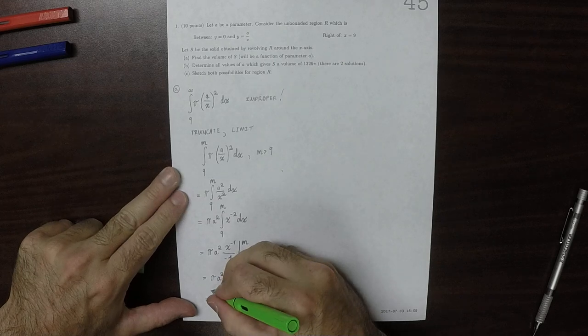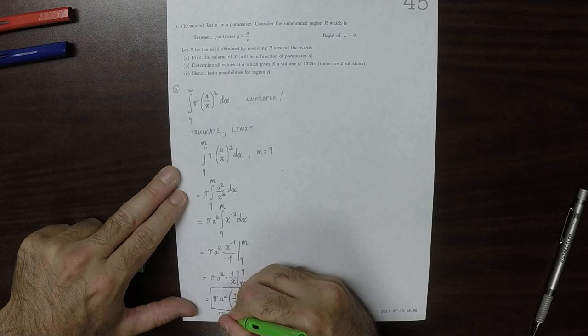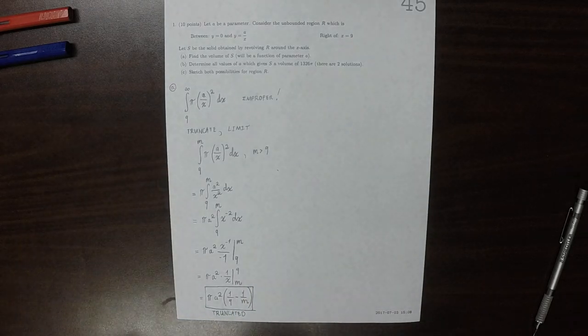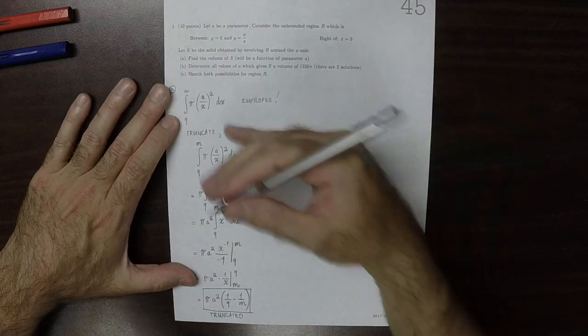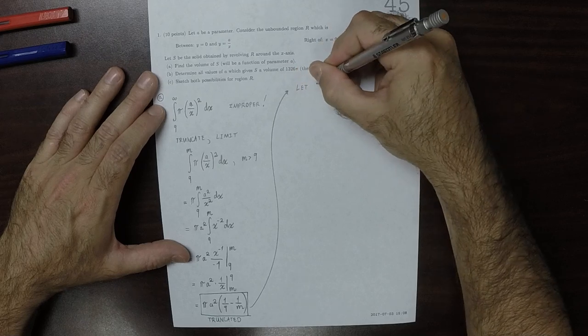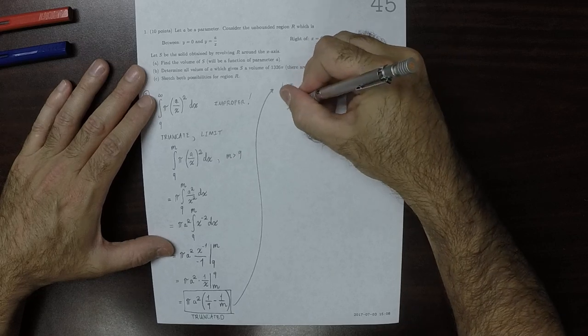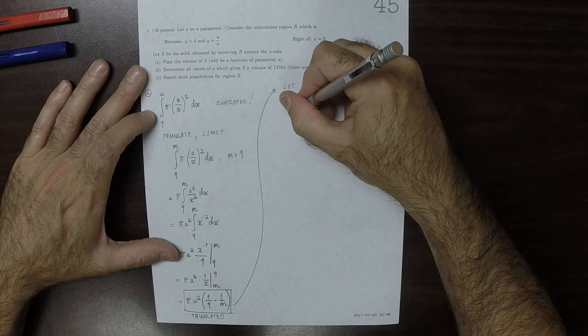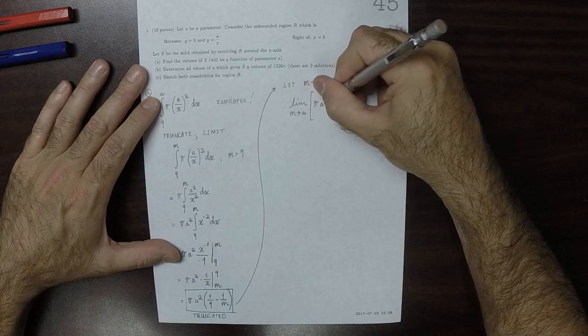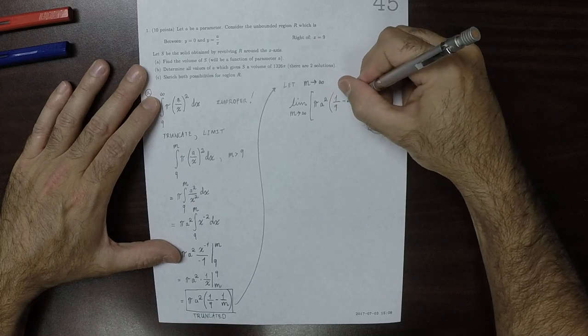So, the truncated region. And to find the value of the full region, now we're going to let m go to infinity. So the limit as m goes to infinity of that thing. Pi a squared, 1 over 9 minus 1 over m.